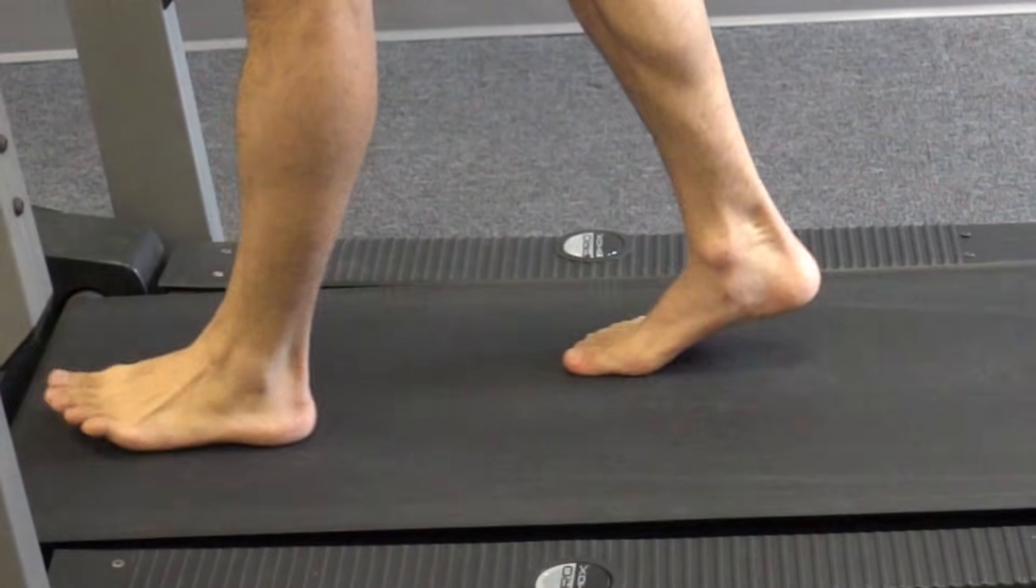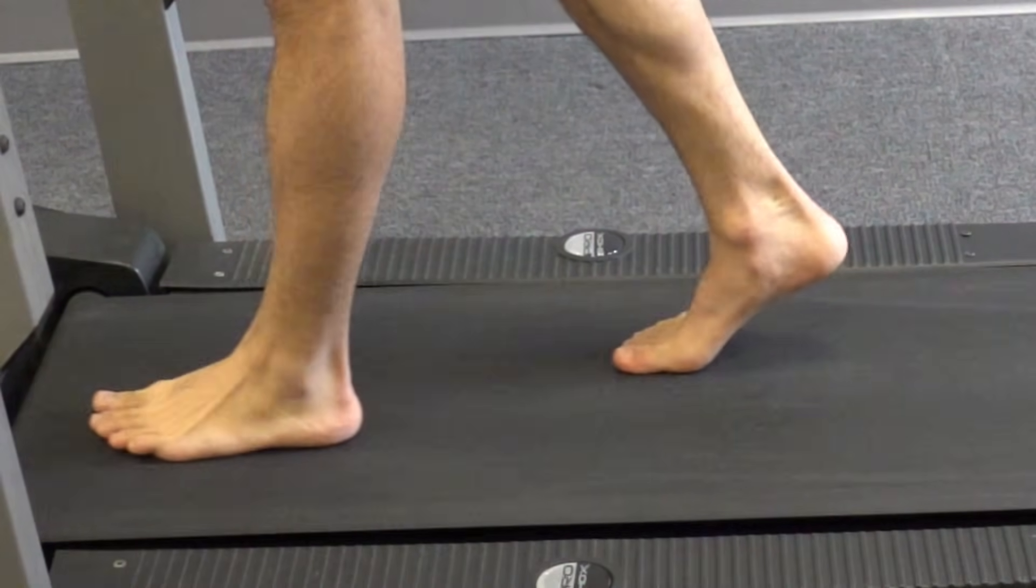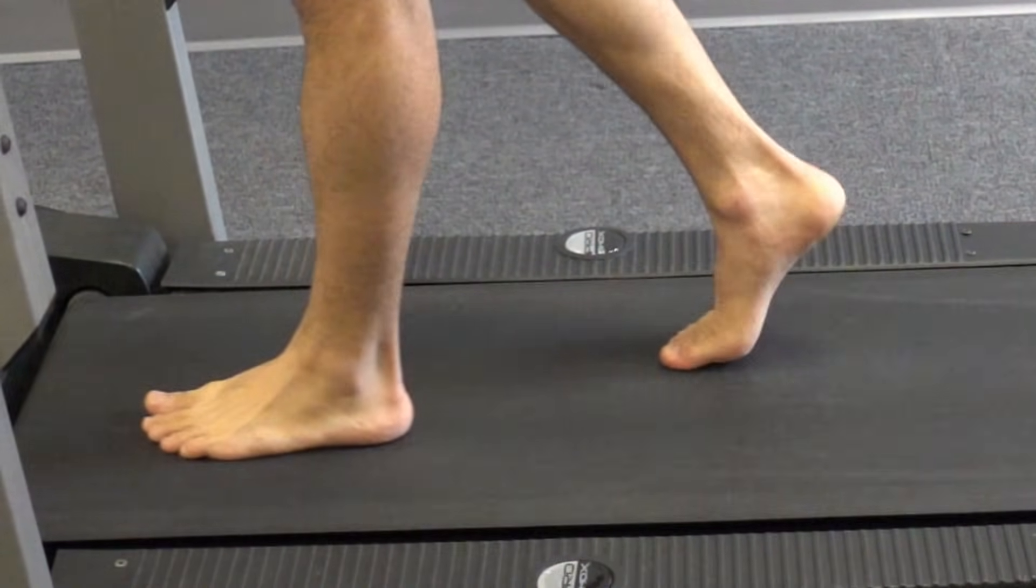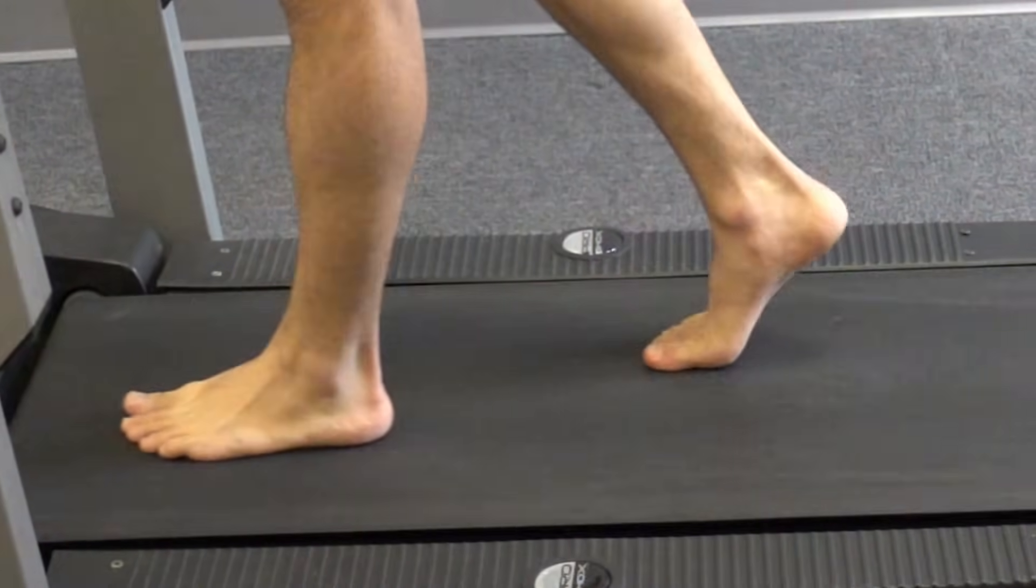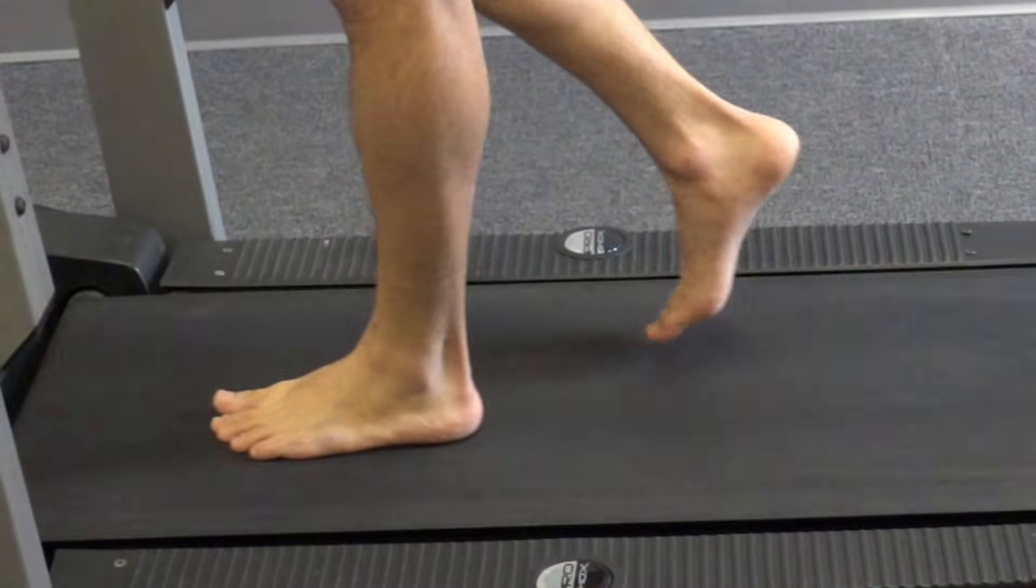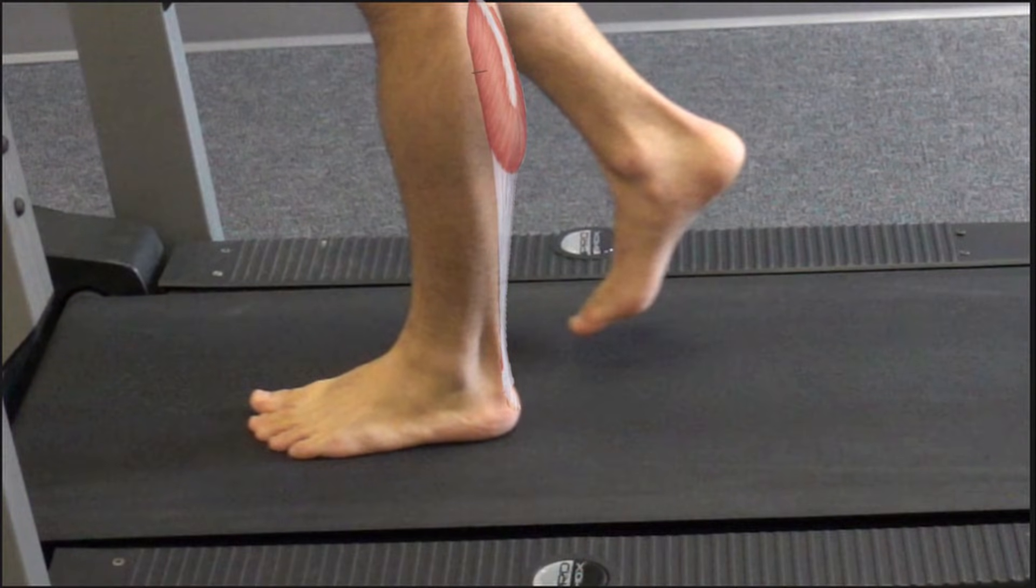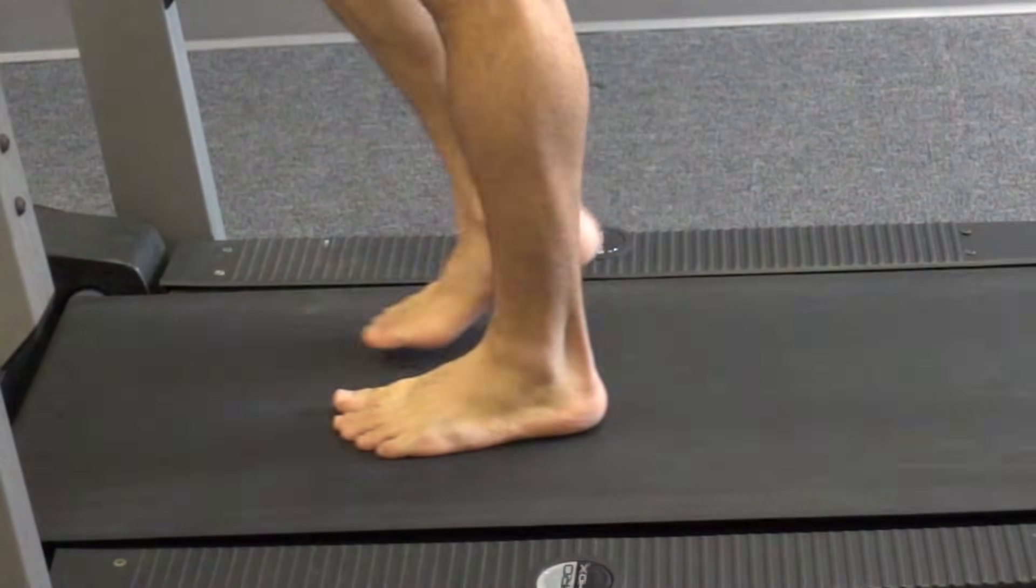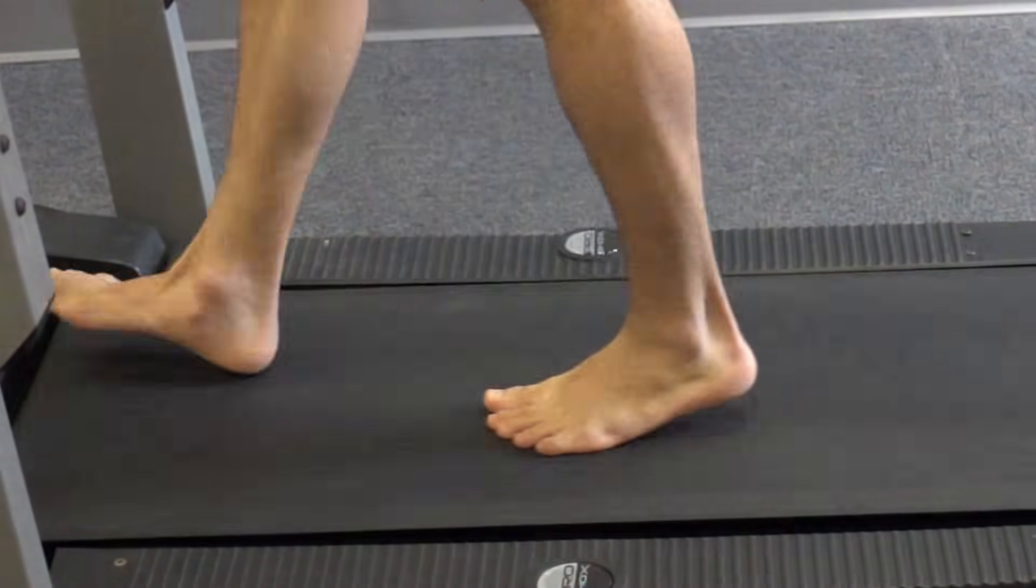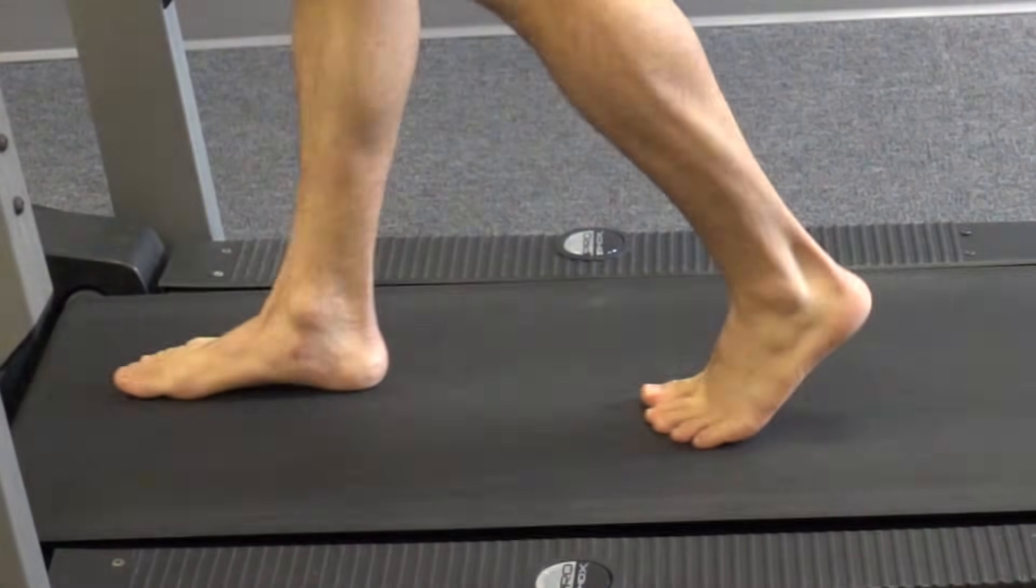As we move into mid-stance and terminal stance, momentum carries our body and our tibia forward past our foot. It's the responsibility of the gastroc and soleus muscles to slow that momentum by eccentrically contracting. As the foot transitions from terminal stance to pre-swing, our gastroc and soleus concentrically contract to generate push-off to propel us forward.